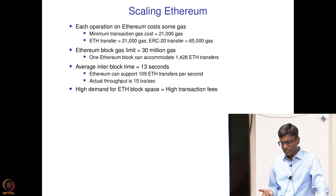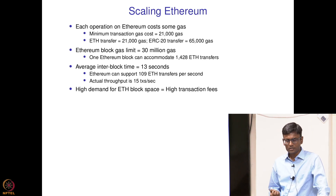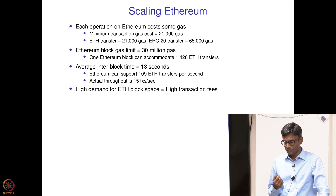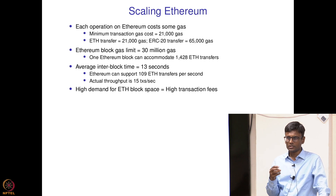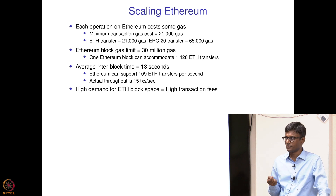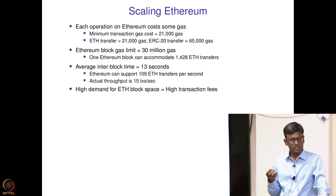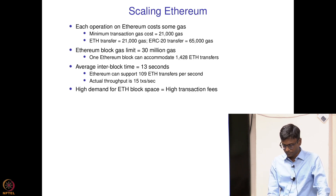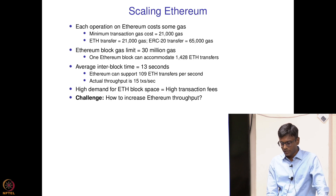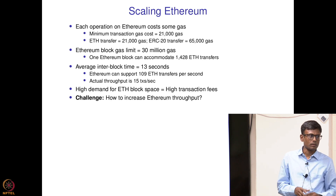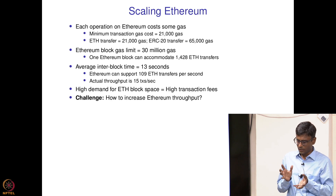Whenever there is high demand for Ethereum block space — for example, an NFT auction — people compete to get their transactions included in a block. They end up paying higher transaction fees because miners always include transactions that pay higher fees. So transaction fees go high. This raises the question: how do we increase Ethereum's throughput, that is, how do we increase the number of transactions a block can accommodate?